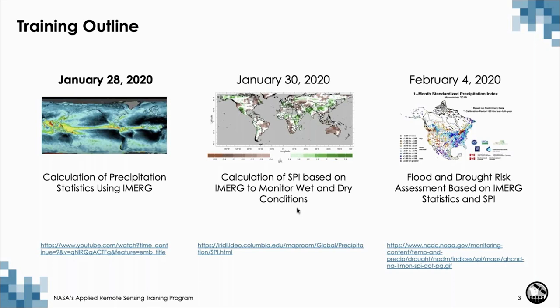The last session on February 4th will focus more on how to assess flood and drought risk, in which you use statistics calculated in the first two sessions and combine them with additional socioeconomic data to assess risk of flood and drought in a given region. The last session will be mostly hands-on exercise where participants will be conducting exercises that we provide instructions about.